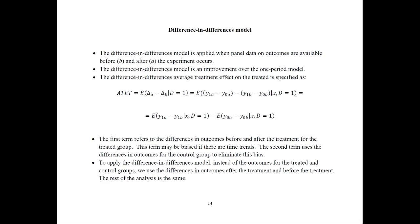In practical terms, to estimate the DiD model you replace the outcome variable Y with the difference (Y_after minus Y_before) and then estimate the model in the same way as before.